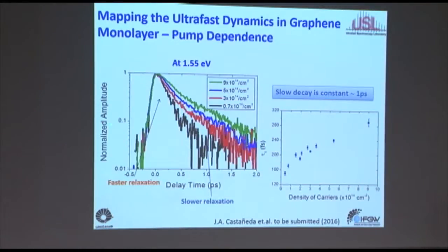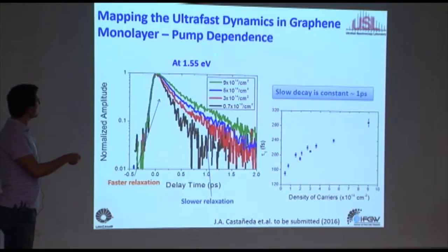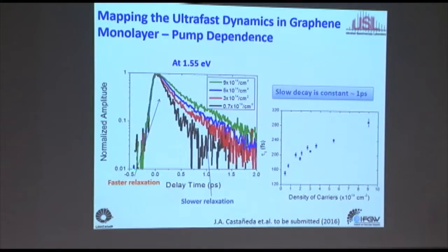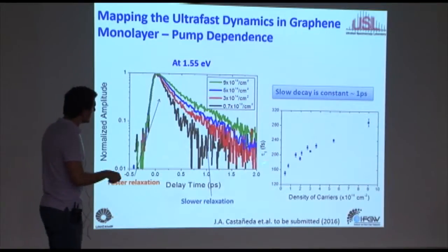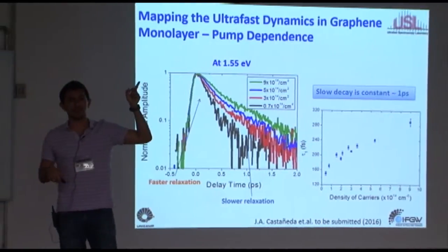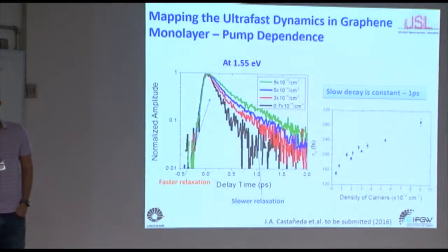To do that, we start by doing pump and probe at 800 nm, or 1.55 eV. This is transient absorption. The total scan is two picoseconds, so we're looking at ultrafast dynamics. We excite the sample and start seeing a fast relaxation, with a slow component showing up. Even the fast relaxation seems to change slightly with the density of excited carriers. This is all at a single wavelength — pumping and probing at the same wavelength. Remember when I talked about quantum dots, increasing the pump made dynamics faster because of Auger. Here, increasing the pump makes it slower. So it's a different thing.